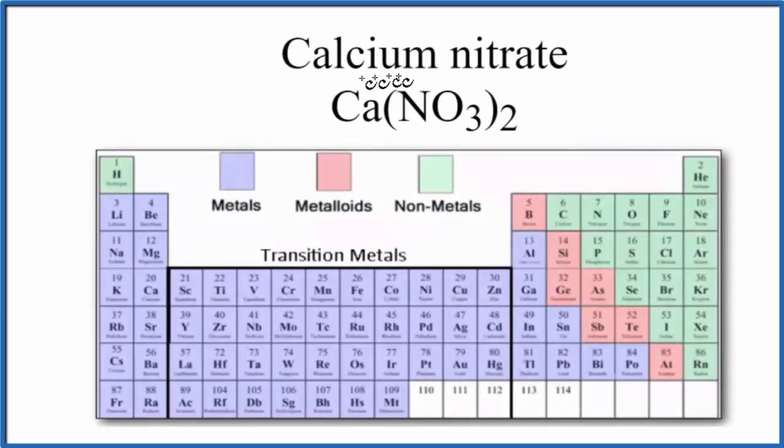In this video, we'll look at whether calcium nitrate, that's Ca(NO₃)₂, is ionic or covalent.